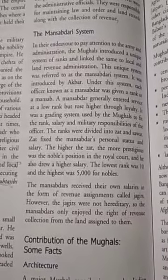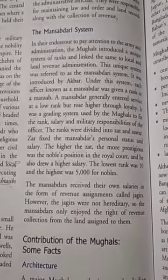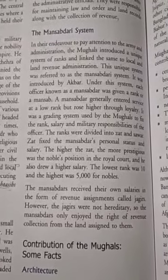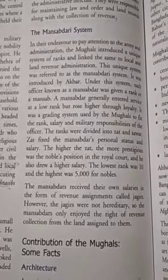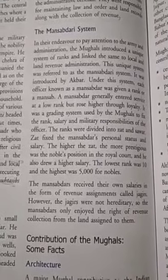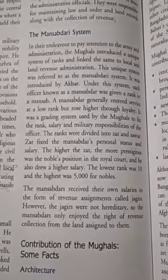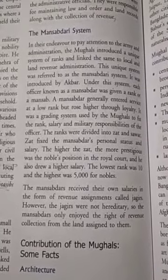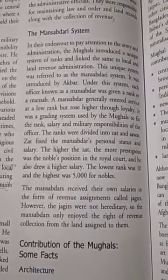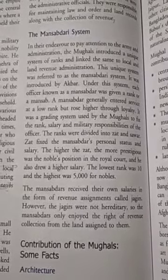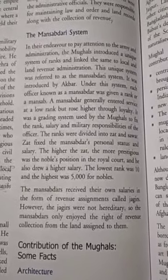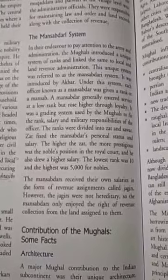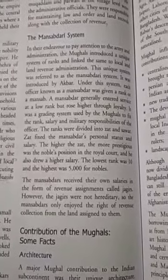The mansabdars received their salaries in the form of a revenue assignment called jagir. However, the jagir was not hereditary. The mansabdars enjoyed the right of revenue collection on the land assigned to them. This system was introduced by Akbar.